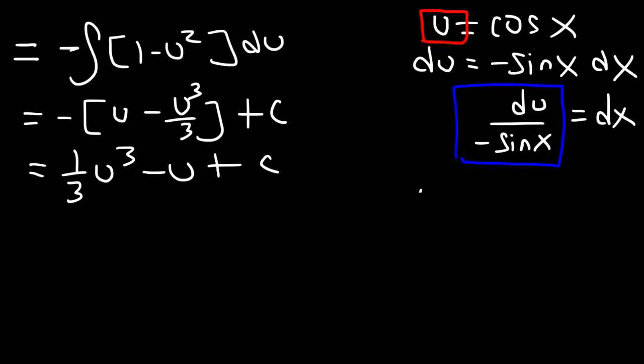The last thing that we need to do is replace u with cosine x. And so this will give us the final answer of 1 third cosine cube minus cosine x plus c.